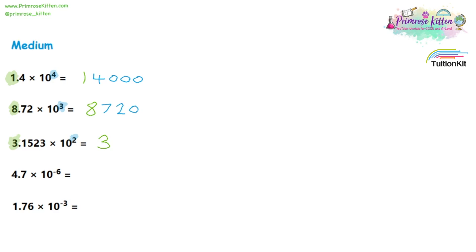Here is a bit more complicated, because after the 3 we just need two other numbers before a decimal point. So this is going to be 315, and then the .23 will come after the decimal point.